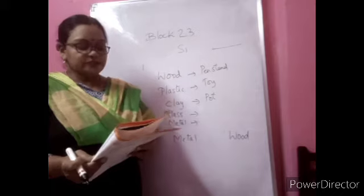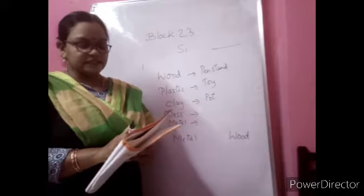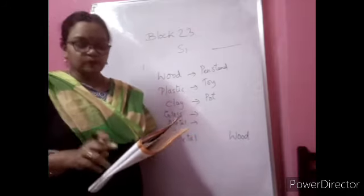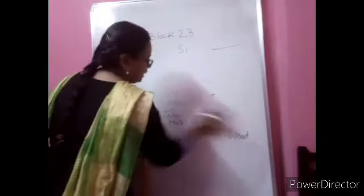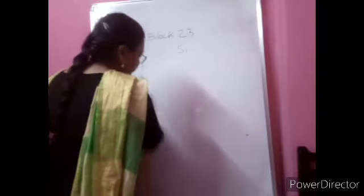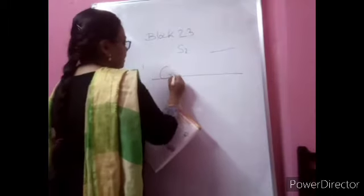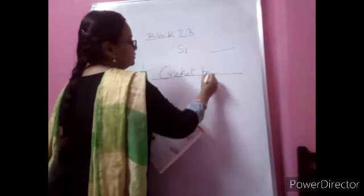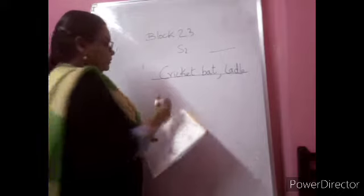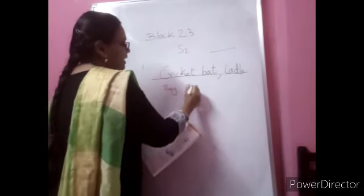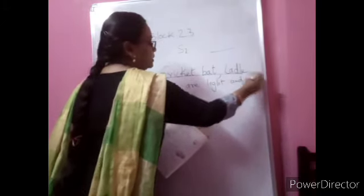Page number 36: write the date. First question — which of these is not a metal? There is a jar, cricket bat, ladle, and a chalini. Among these, which is not a metal? The cricket bat and the ladle are not made up of metal. How can you tell? Because they are light and not shiny, unlike the jar and the chalini.